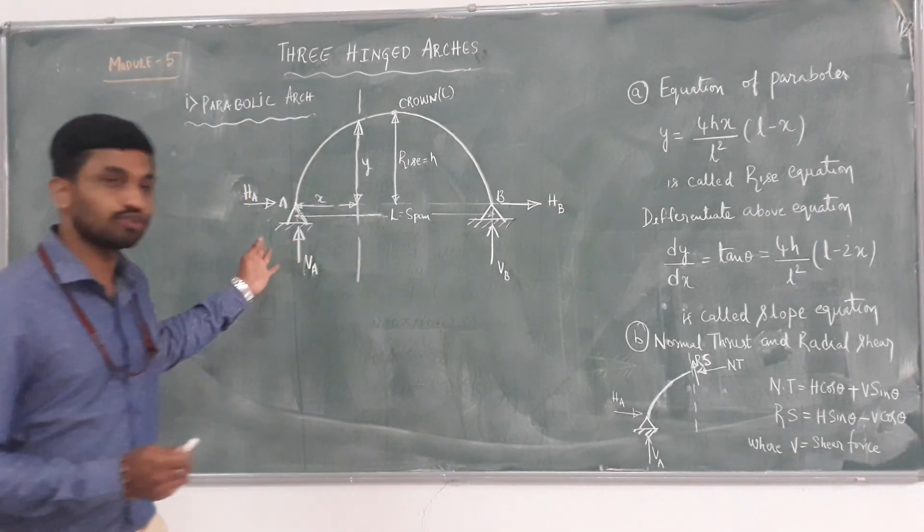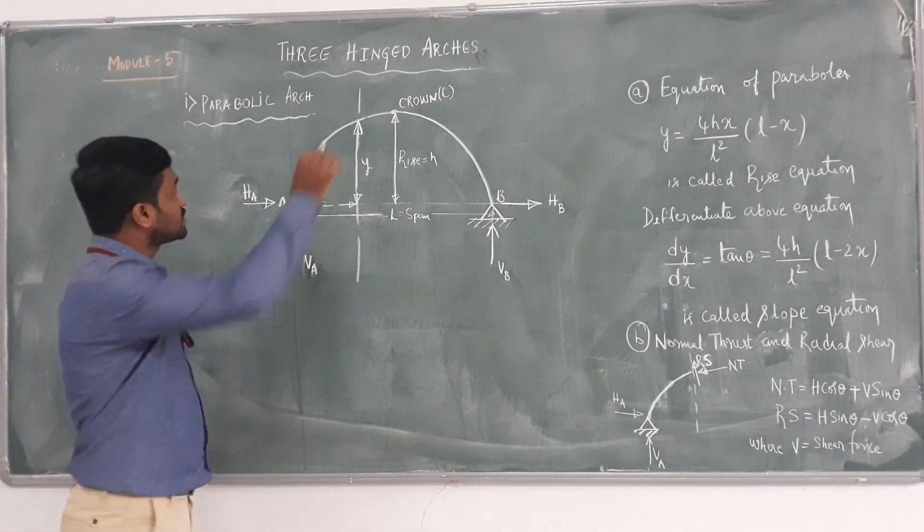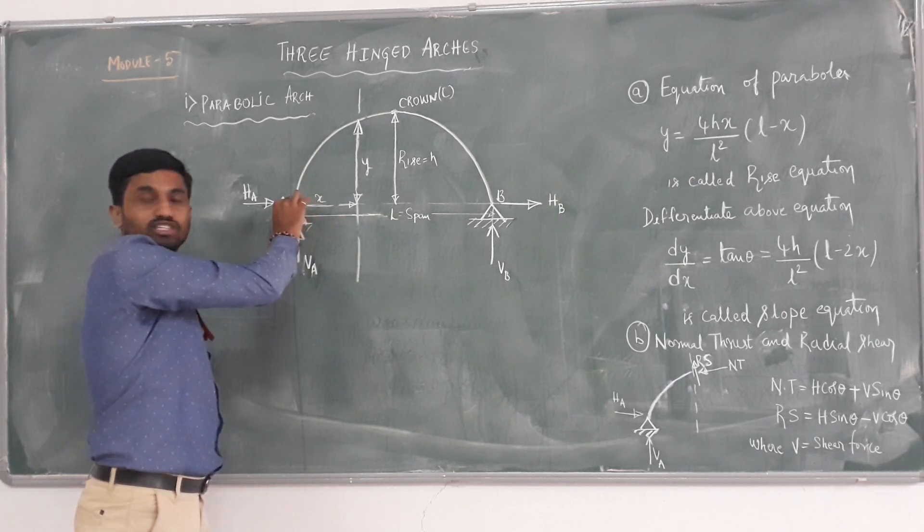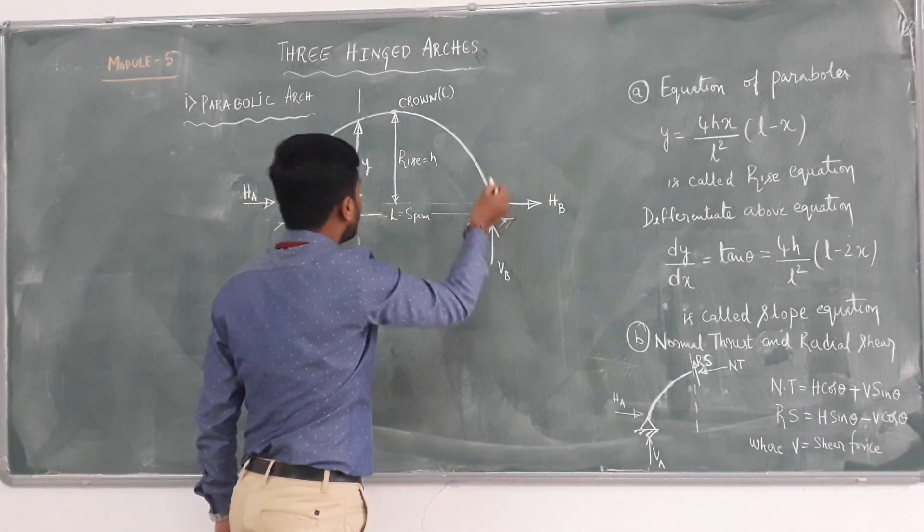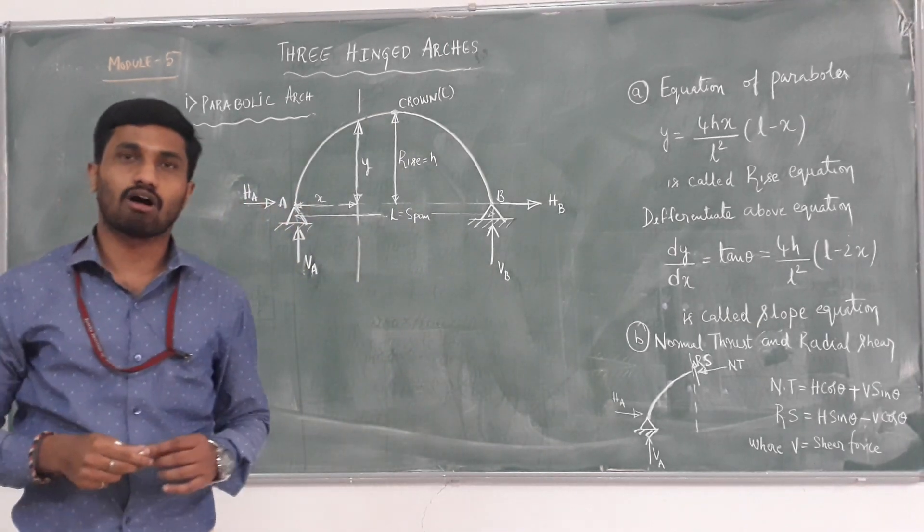The figure shows the three-hinged parabolic arch. As the word says three hinges, here A is one hinge, B is one hinge, and at the crown we are having a hinge. So it is called three-hinged arches.